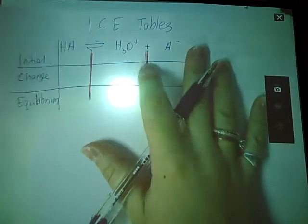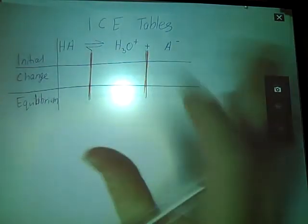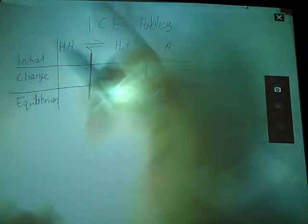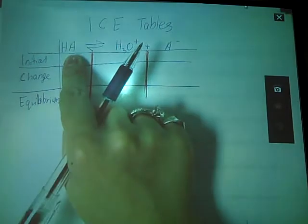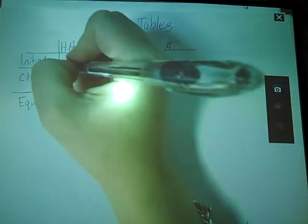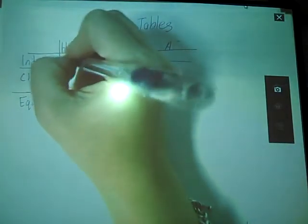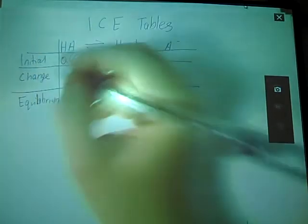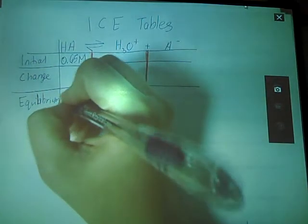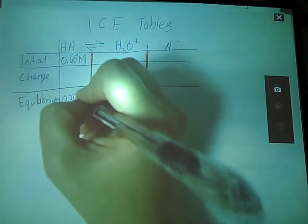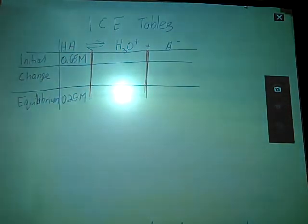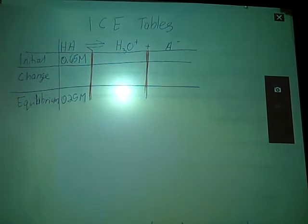So this particular problem is something I'm pulling from another paper, and it tells you that the initial concentration of your acid, when you put it in there, is 0.65 molar, and at equilibrium we measure and find that it's 2.5 molar, and it asks us to fill in the rest. That's a whole lot of blanks.